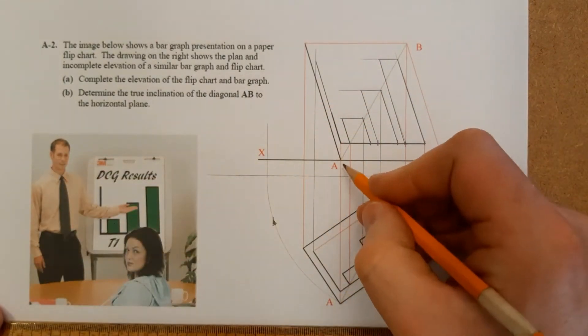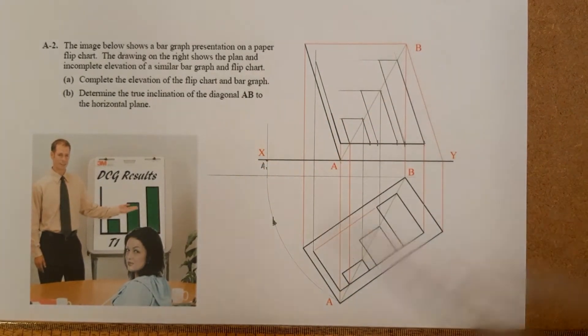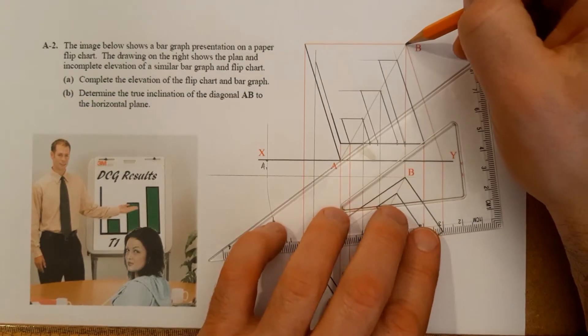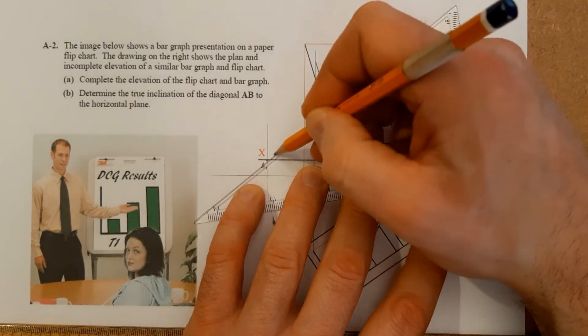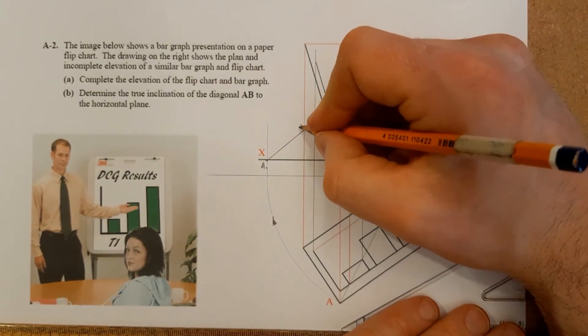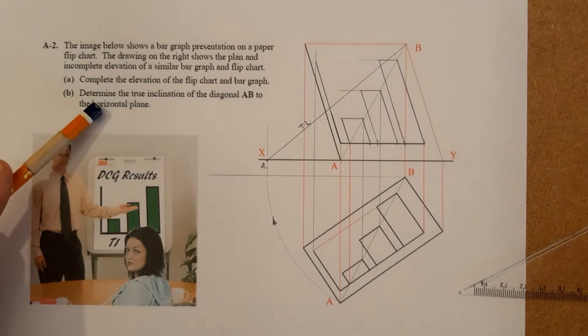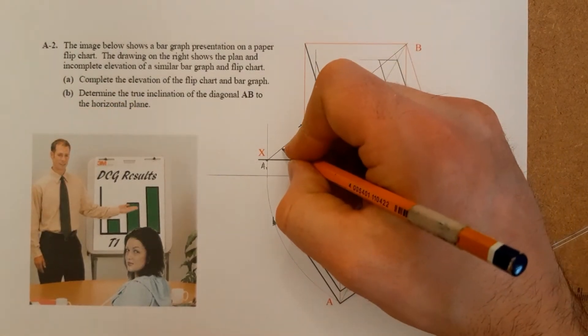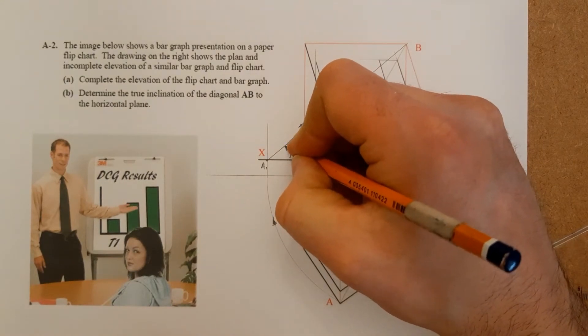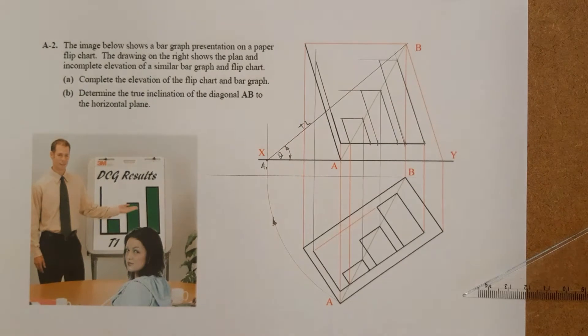A now is on the ground actually. It's no height, so we'll just call that A1. And then if you join in A1 onto B, that would be the true length of that diagonal. You can also see not only is it a true length, but it has the true inclination there. So that angle is its true inclination to the horizontal plane when it's revolved around like that.